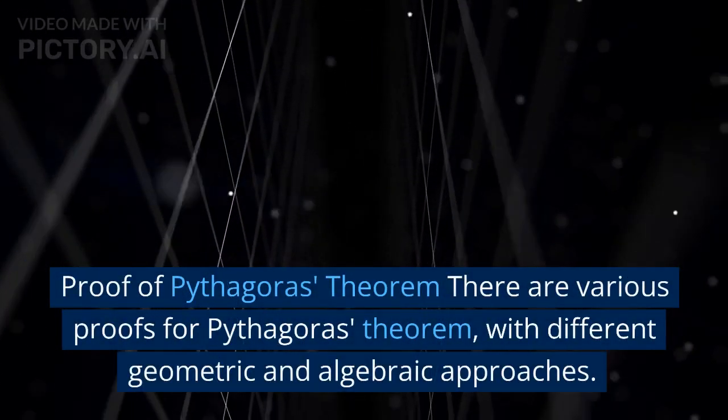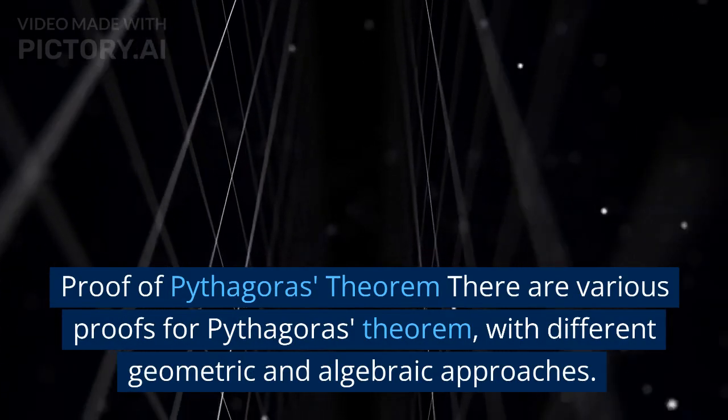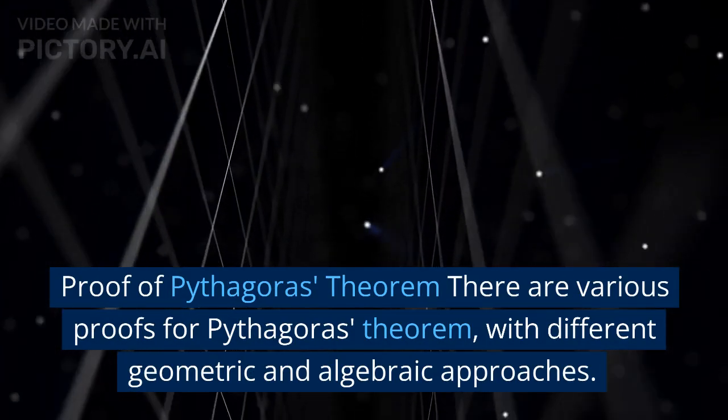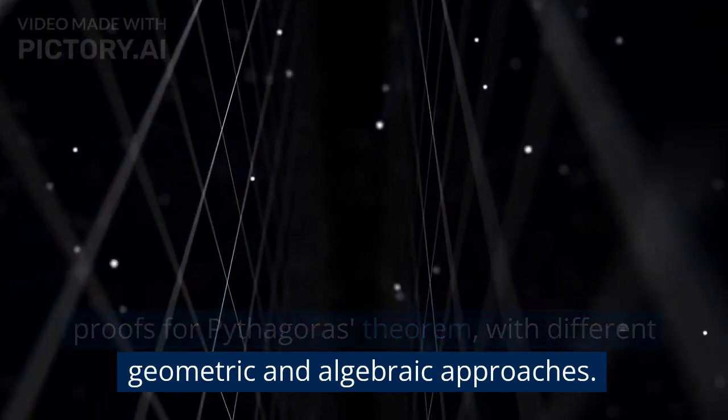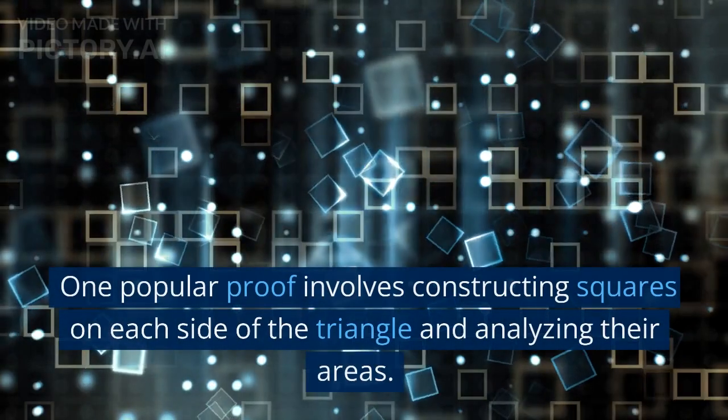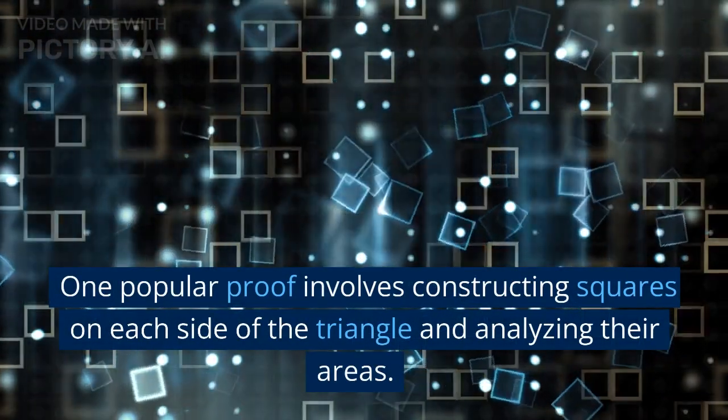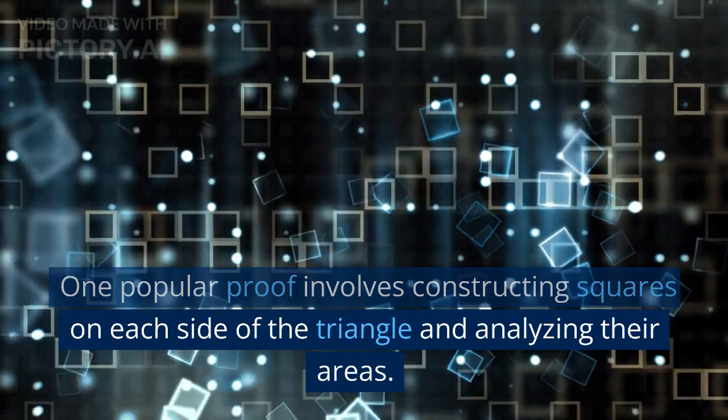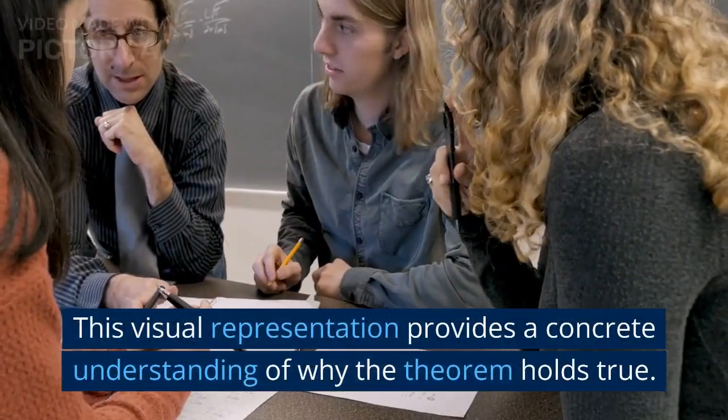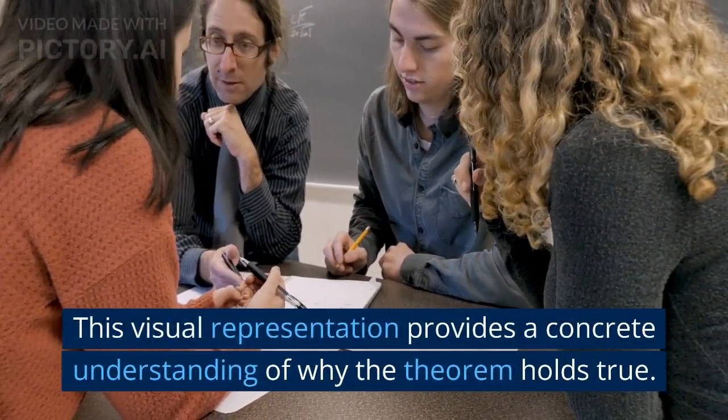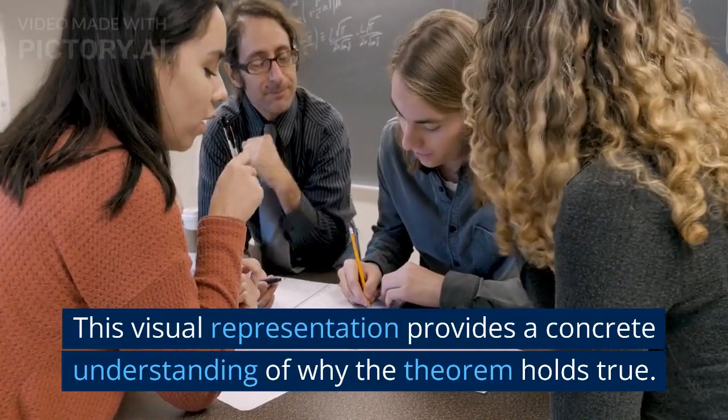Proof of Pythagoras' Theorem: There are various proofs for Pythagoras' theorem with different geometric and algebraic approaches. One popular proof involves constructing squares on each side of the triangle and analyzing their areas. This visual representation provides a concrete understanding of why the theorem holds true.